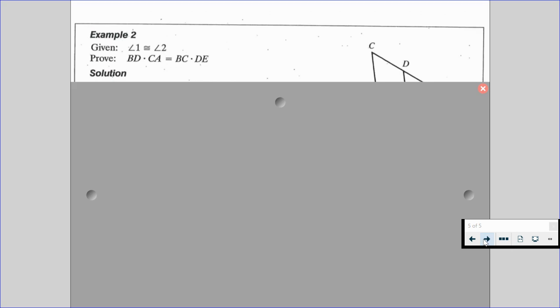In example number 2, we're asked to prove that the product of BD and CA is equal to the product of BC and DE. While we're given angle 1 is going to be congruent to angle number 2.